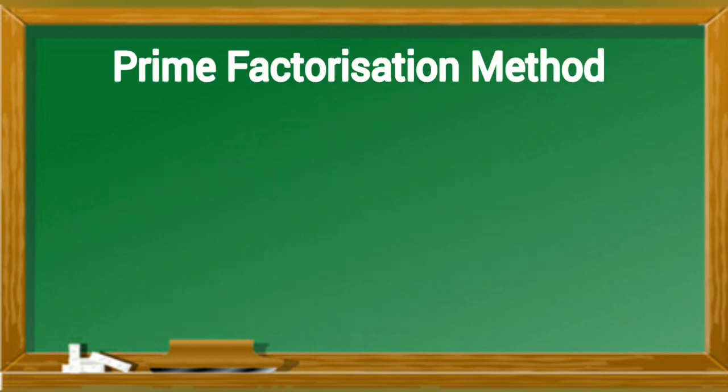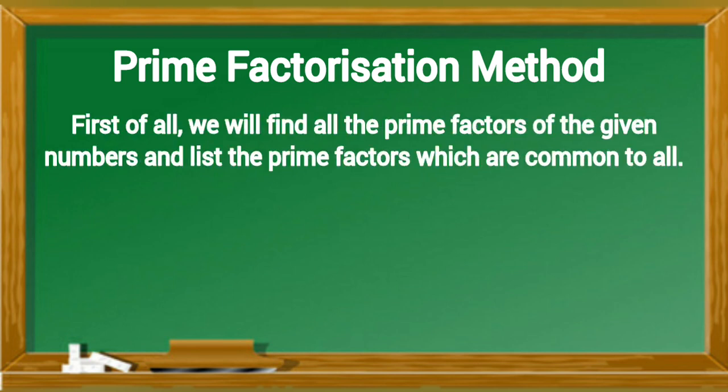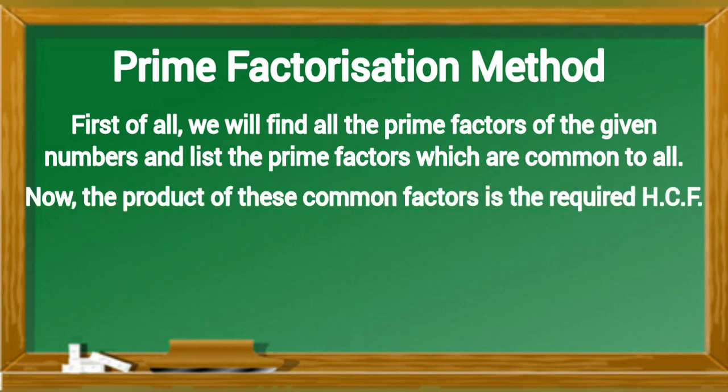Prime factorization method. First of all, we will find all the prime factors of the given numbers and list the prime factors which are common to all. Now, the product of these common factors is the required HCF.